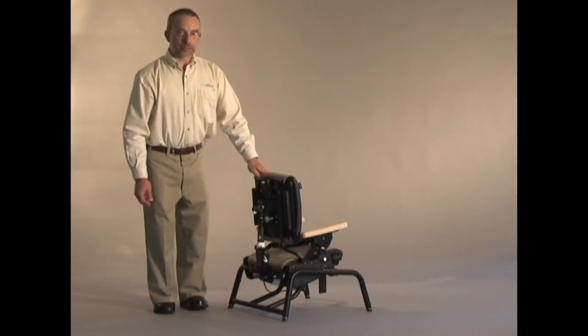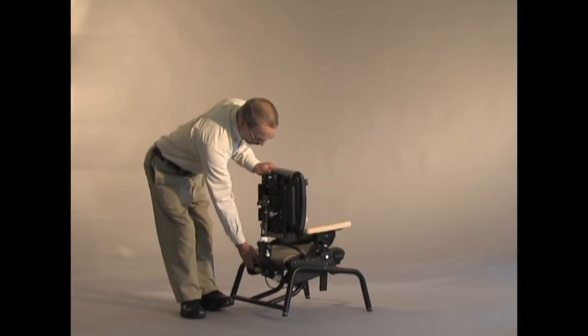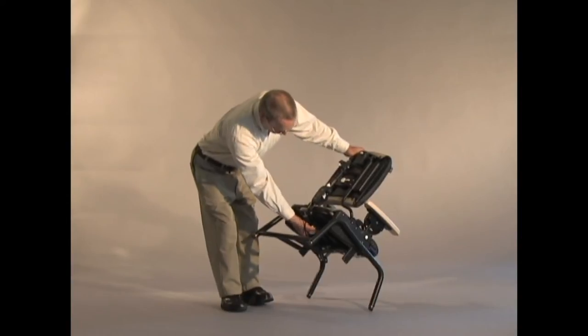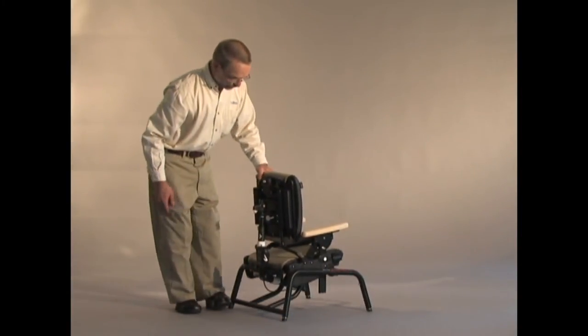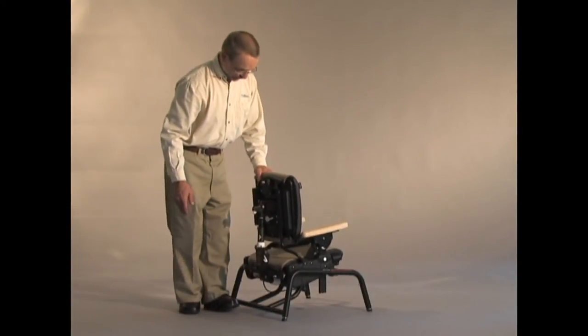We have a similar feature below the seat. I'll raise this up so you can see what I'm doing. If I rotate this handle, I'm activating a compression spring below the seat. Now we have ten degrees of bounce below the seat.